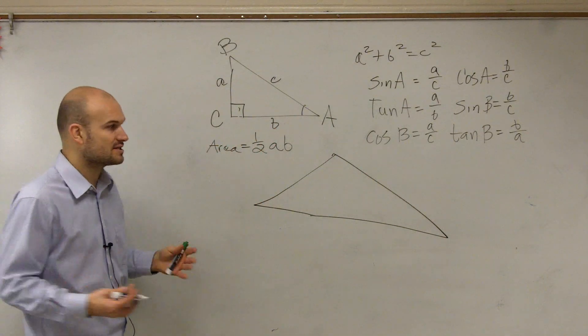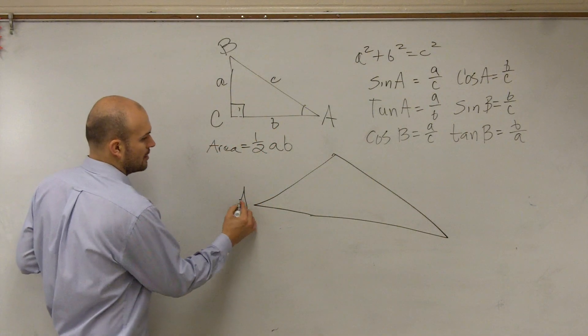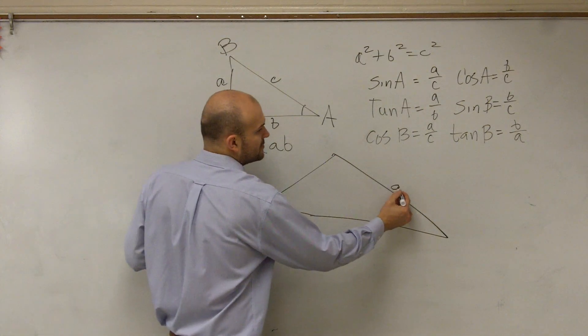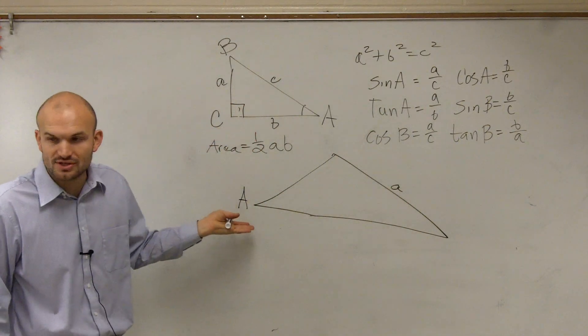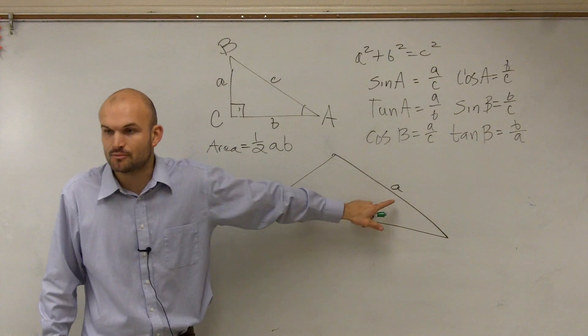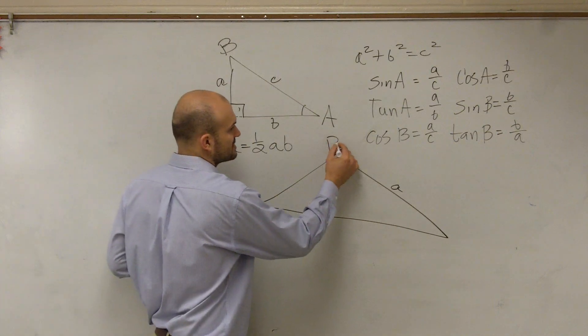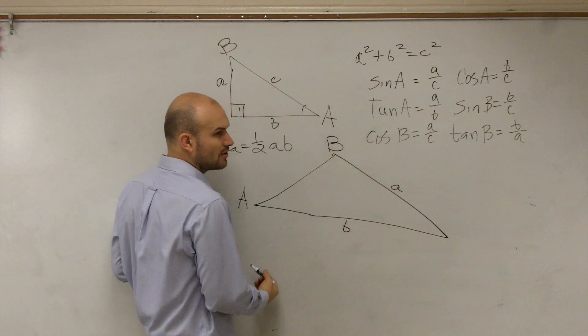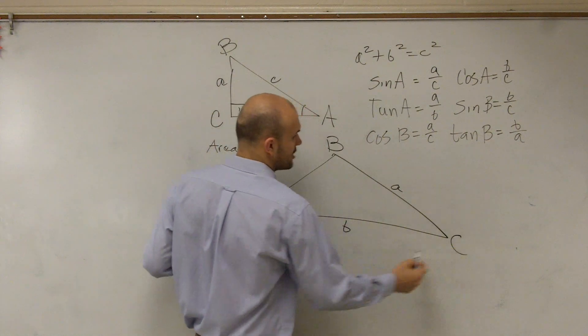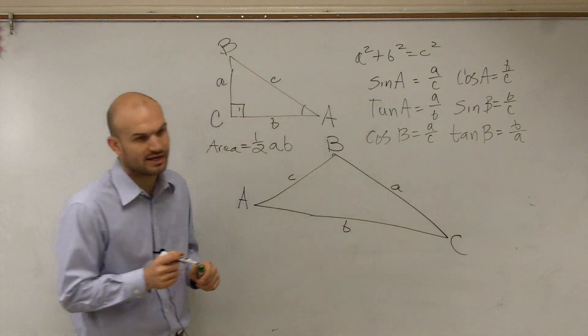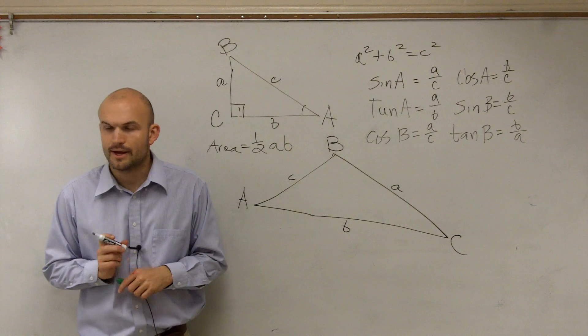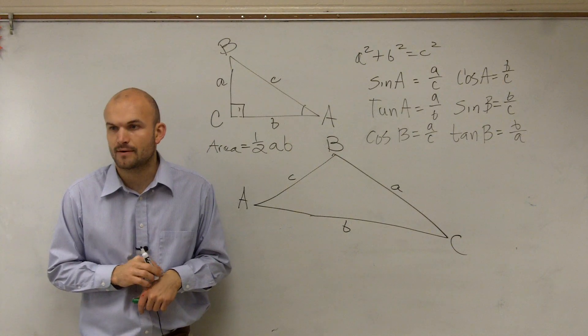However, a lot of the same stuff is going to work. How we label a triangle, we're going to use the same kind of format. If I'm going to call this angle A, the opposite side will be lowercase a. If this is uppercase B, this is lowercase b. If this is uppercase C, here's lowercase c. Any questions on this so far?